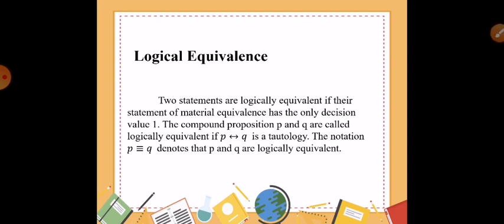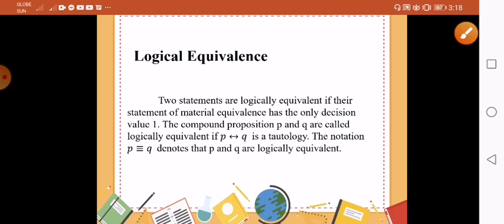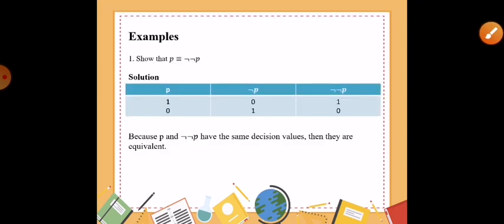Logical equivalence. Two statements are logically equivalent if their statement of material equivalence has the only decision value 1. The compound proposition P and Q are called logically equivalent if P implies Q is a tautology, and P if and only if Q is a tautology. The notation P logically equivalent Q denotes that P and Q are logically equivalent. In short, when we say logically equivalent, as long as the columns are the same, therefore the statements could be logically equivalent.